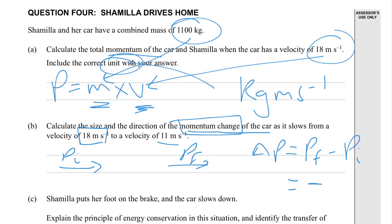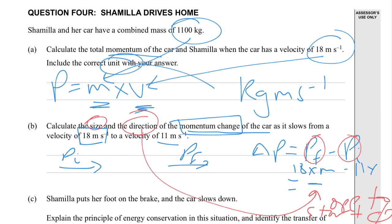And the negative answer indicates the direction, because it wants you to give the size and the direction. The direction with the negative means it's going in the opposite direction to which the car was originally going. So opposite to start direction. In terms of the calculations, it's mass times velocity minus mass times velocity. So 18 times the mass minus 11 times the mass. You can do that calculation yourself to find that value.